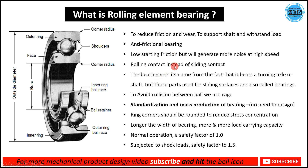Bearings reduce wear and support the shaft, bearing the load coming on it. The different components of a bearing include the outer ring, inner ring, outer race, and inner race. The shaft — generally called the journal — fits inside, and the bearing goes into the housing. The outer portion is fixed and the inner ring is the rotating one.